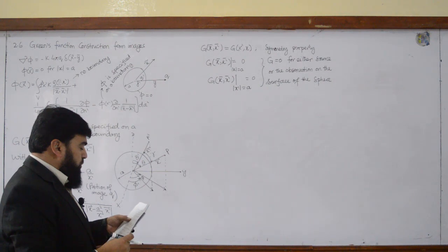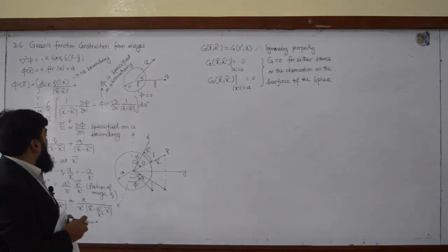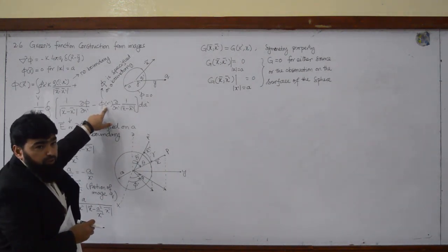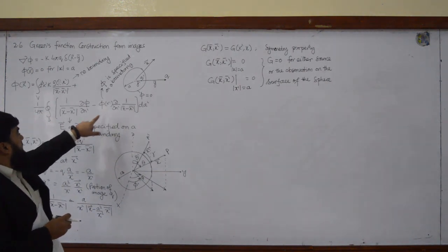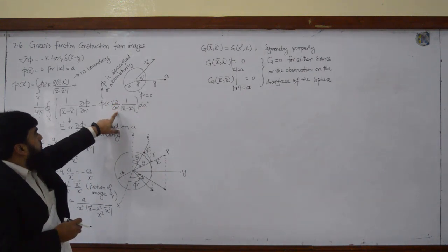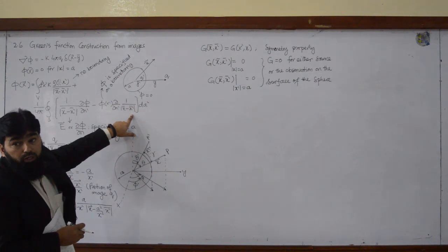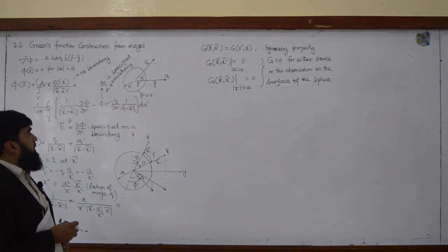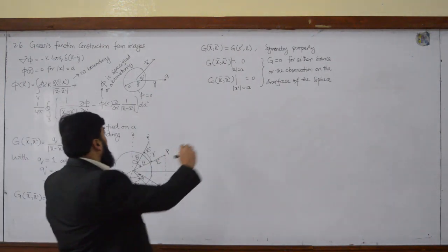Now what we will actually require from all this: phi is specified on the boundary, so I will find out this one and then the normal derivative curly n prime of this one — I will have to calculate this derivative. So in order to calculate that derivative, I will have to write a few things first.